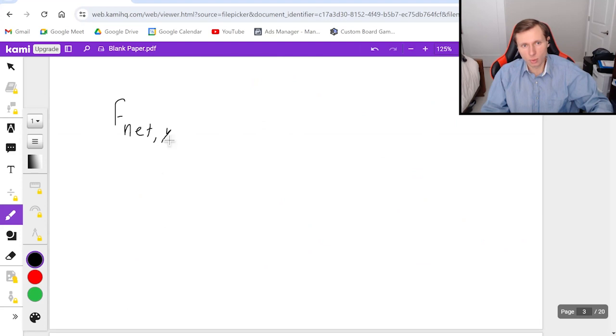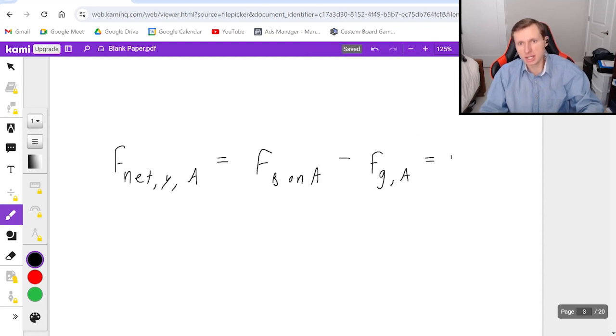So F_net_y,a is equal to all the forces pointing up, which we said was force b on a, minus the forces going down. That was F_g,a. And then I set it equal to mass times acceleration. Now I know this acceleration because the boxes are not moving. That acceleration is zero. So then F_b on a, which is what I'm solving for, minus F_g_a. I know what the force of gravity is. It's mass times gravity. Mass of a is 2. g is 9.8. That's the numbers that go in for F_g_a. And then that just equals zero.